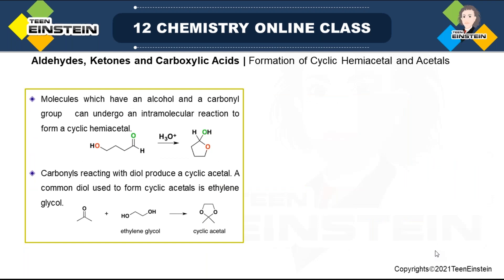The hemiacetal and acetal seen so far are non-cyclic. But sometimes cyclic hemiacetal or acetal formation is also possible — when the alcohol acting as nucleophile is part of the original substrate itself. So molecules which have both an alcohol group and a carbonyl group can undergo intramolecular reaction to form cyclic hemiacetal. Here we have one alcohol and one aldehyde — normally the ratio of alcohol to carbonyl compound is 2:1, but in this case we have one of each, so we end up with hemiacetal.